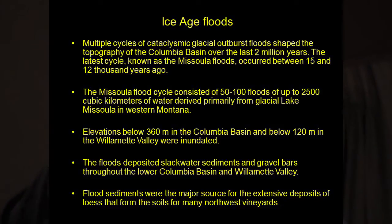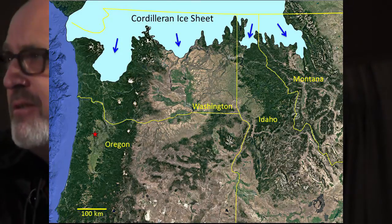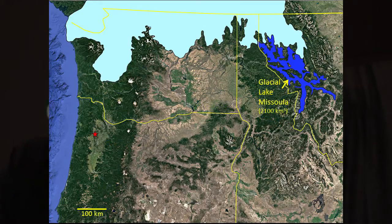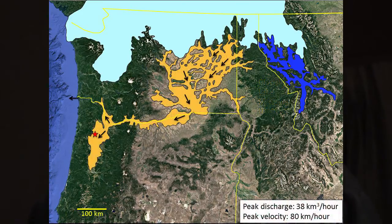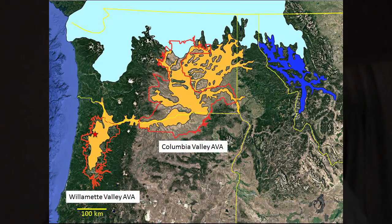The Cordilleran Ice Sheet advanced and dammed the Clark Fork River in northern Idaho, creating Glacial Lake Missoula, which impounded an enormous amount of water. When the water got high enough, it floated the ice dam — which would have been on the order of 600 to 800 meters high — destroying it. The resulting floods swept across eastern Washington, down the Columbia River, all the way up the Willamette Valley to Eugene, and out to the ocean. This happened repeatedly as the ice would advance and reform the dam.